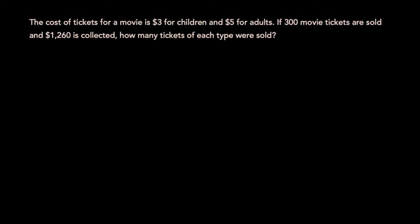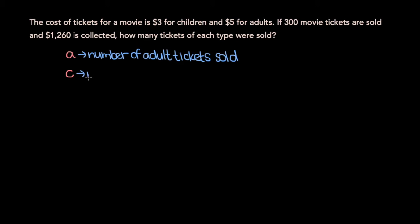The cost of tickets for a movie is $3 for children and $5 for adults. If 300 movie tickets are sold and $1,260 is collected, how many tickets of each type were sold? So let's start off by assigning variables to the quantities we want to solve for. So let's say A is the number of adult tickets sold, and that C is the number of children's tickets sold.